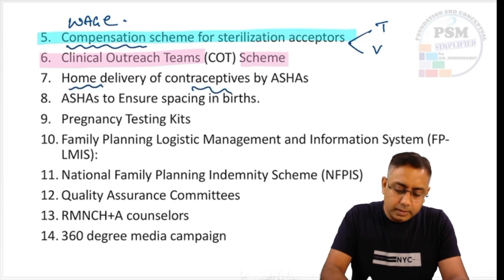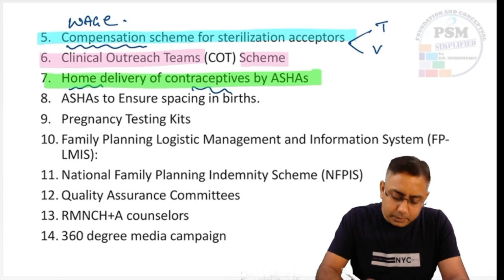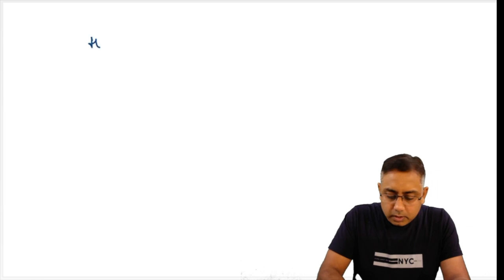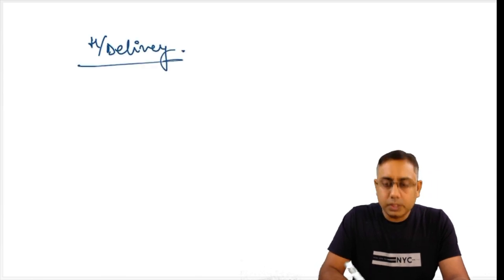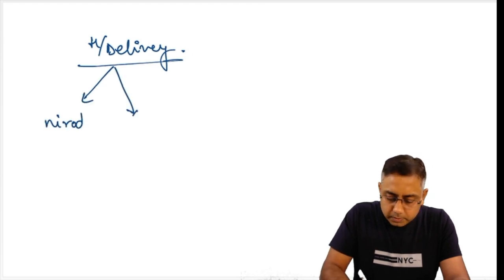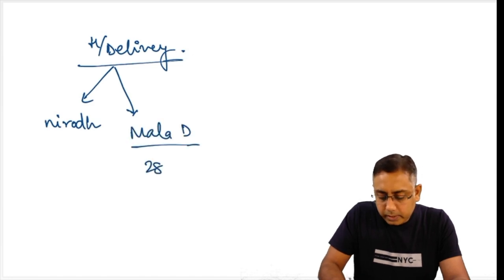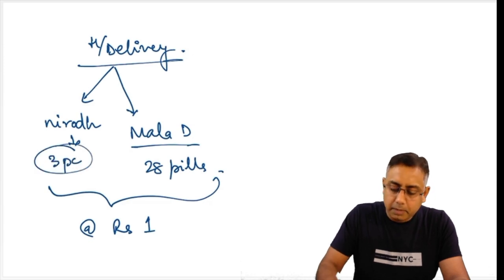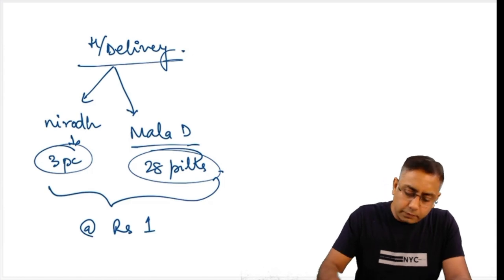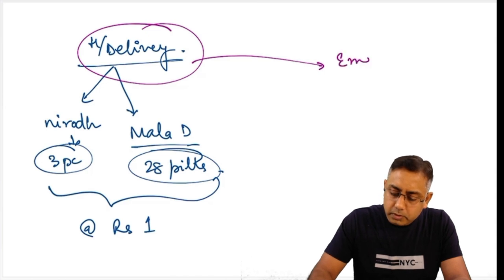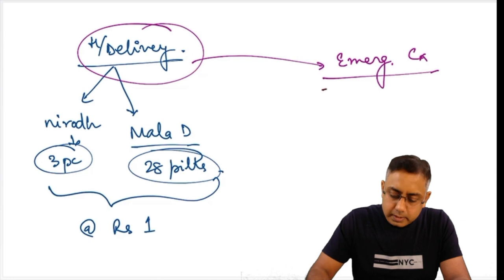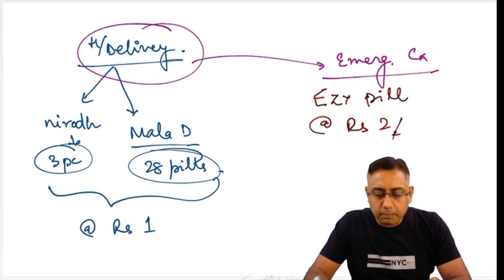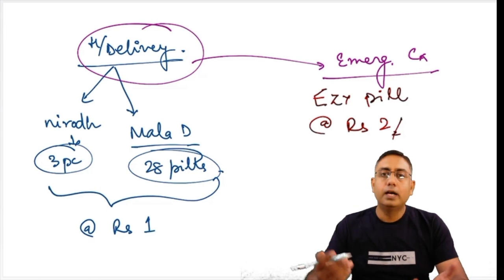Home delivery of contraception — this is the most highlighted point and a prospective MCQ. Home delivery of contraception by ASHA workers: they can give either Nirod condoms or Mala-D tablets (28 pills), both at the rate of Rupees 1. Nirod condoms — 3 pieces, and Mala-D 28 pills at Rupees 1. Apart from that, home delivery by ASHA can also include emergency contraception — Easy Pill given at Rupees 2 per tablet, as a single tablet of 1.5 mg Levonorgestrel within 72 hours of unprotected intercourse.